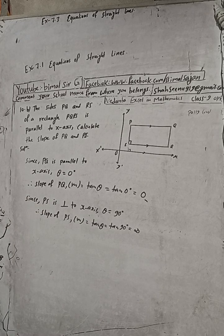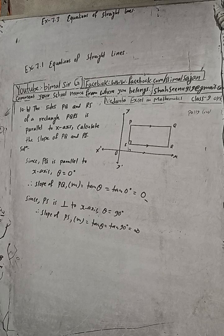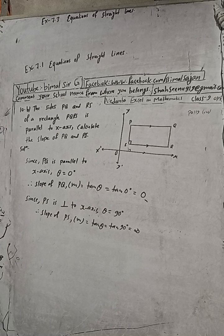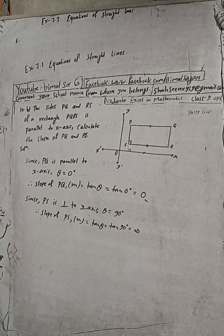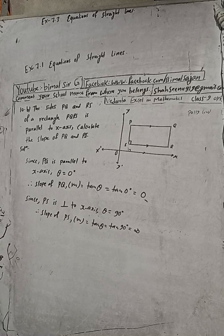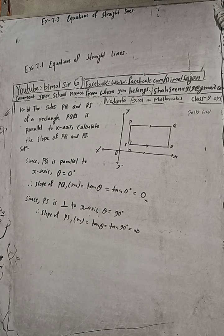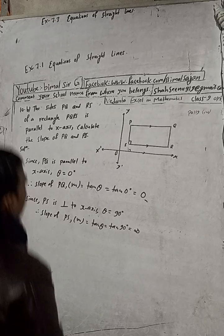Since PQ is parallel to x axis, theta is zero and therefore slope of PQ, that is M is equal to tan theta is equal to tan 0, which is zero. Since PS is perpendicular to x axis, theta is equal to 90 degree, therefore slope of PS, that is M is equal to tan theta, that means tan 90 degree.